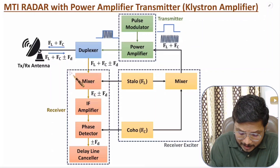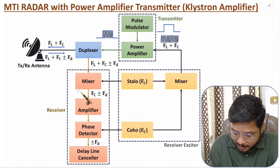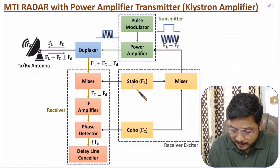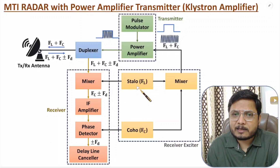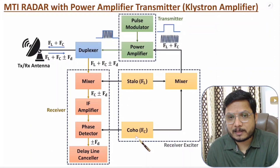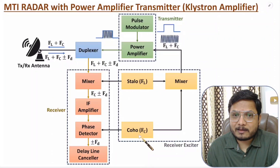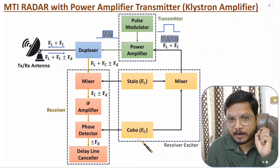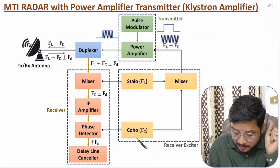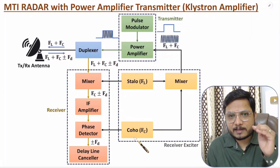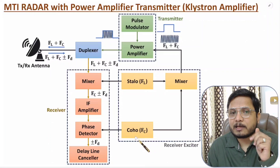In the receiver section, we have the receiver and receiver exciter. In the receiver exciter there are two oscillators: STALO, which is the stable local oscillator, and COHO, which is the coherent oscillator. The coherent oscillator generates frequency FC, which is the intermediate frequency.